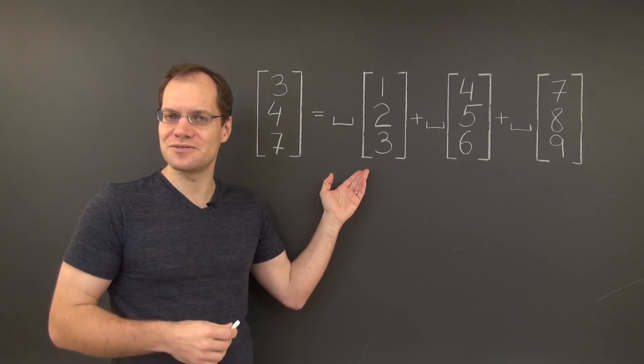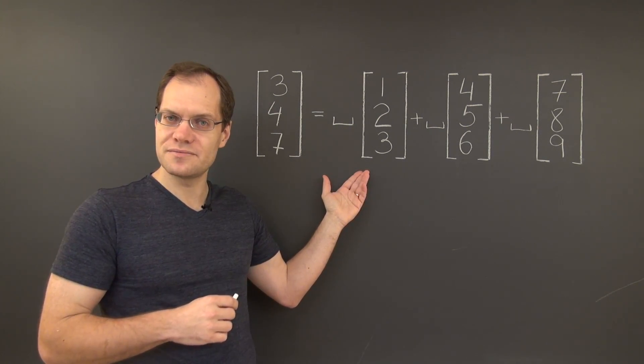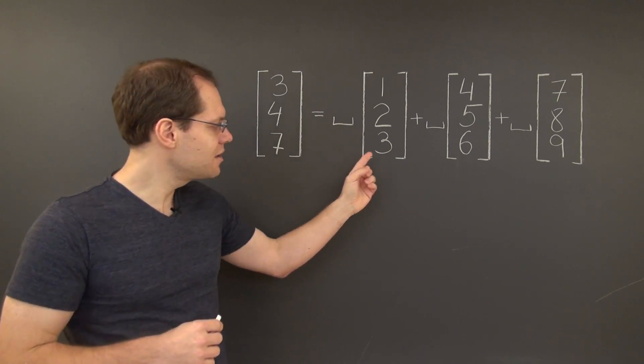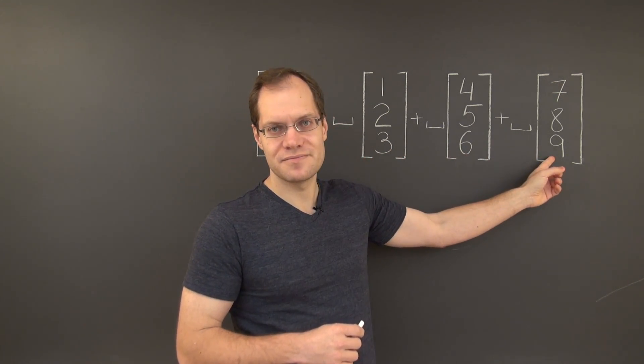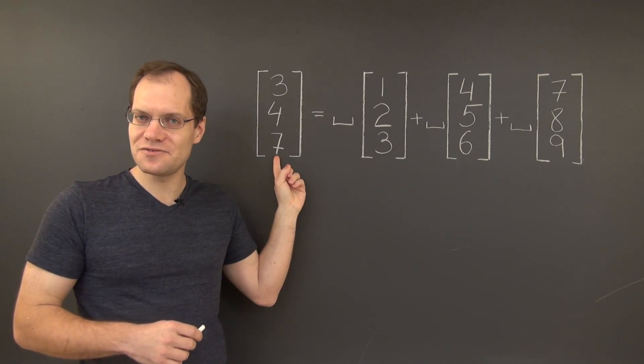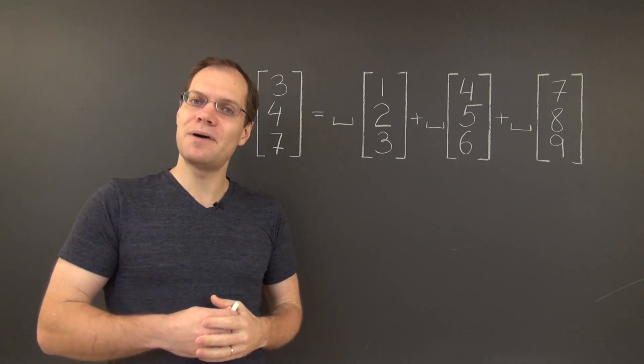With respect to this decomposition problem, it is very tempting to say that it doesn't have a solution because the last entry in each of the decomposition vectors is divisible by 3, while the last entry in the target vector is not divisible by 3. Thus, this decomposition is impossible.